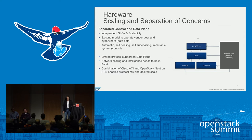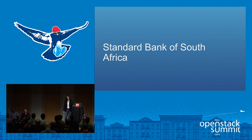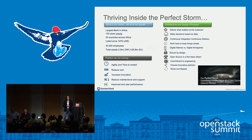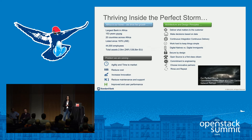Good morning, everyone. My name is Brenda May. I'm from Standard Bank of South Africa. I'm the infrastructure architect for Standard Bank and have been very involved in deploying our private cloud. Just to tell you a little bit about our bank: we're 153 years old, we are the largest bank in Africa, we operate across 20 countries. We've been listed on our stock exchange since 1970 and we have about 44,000 employees. If you include our insurance subsidiaries, it's about 55,000, and we're about a 2 trillion rand operation.